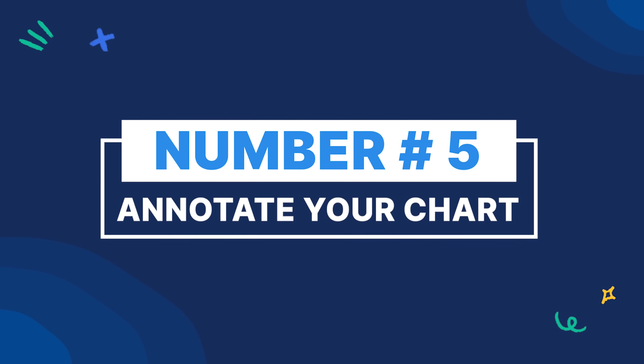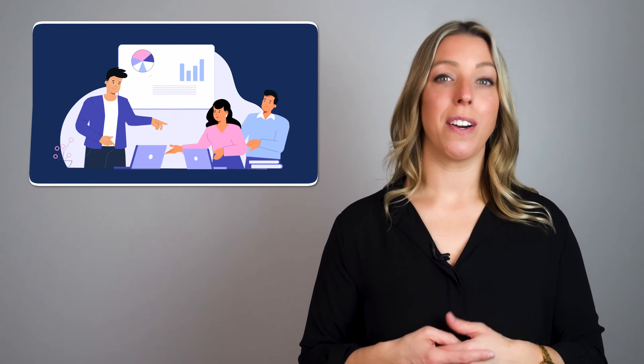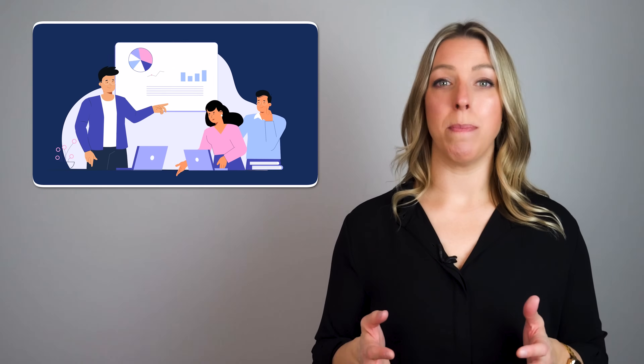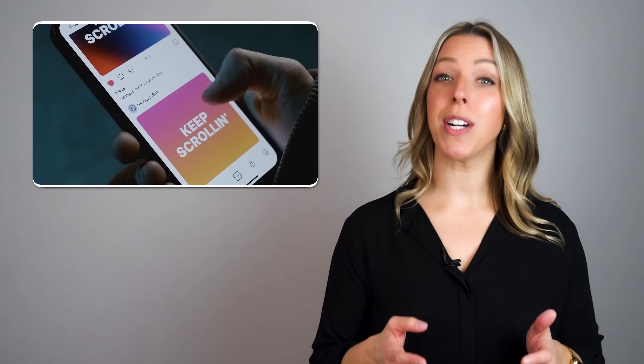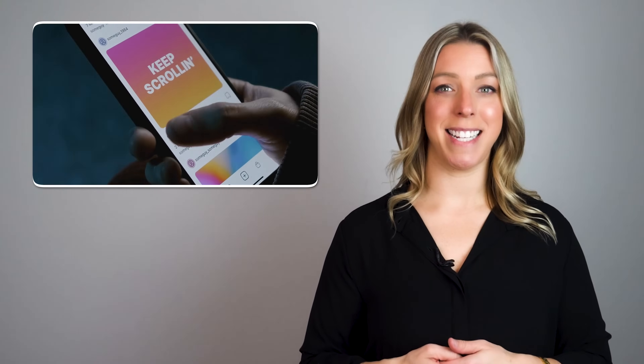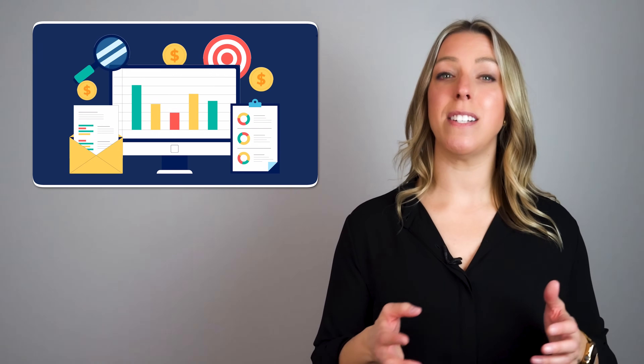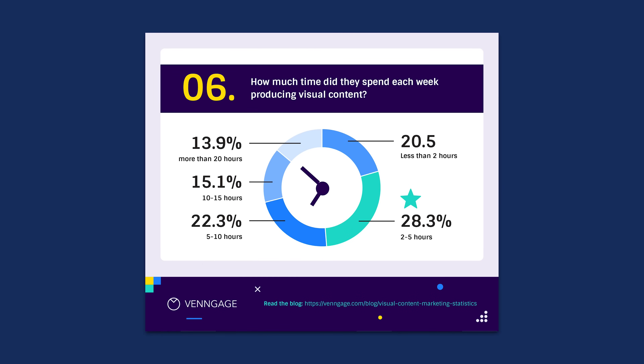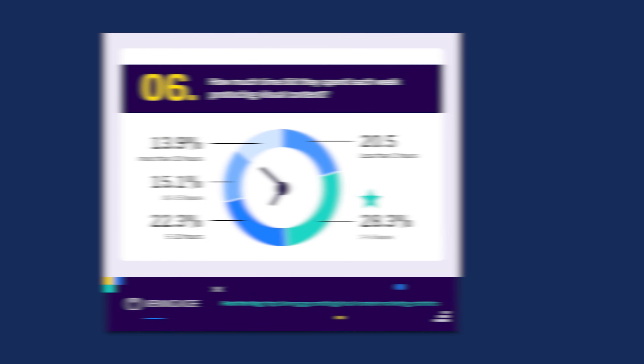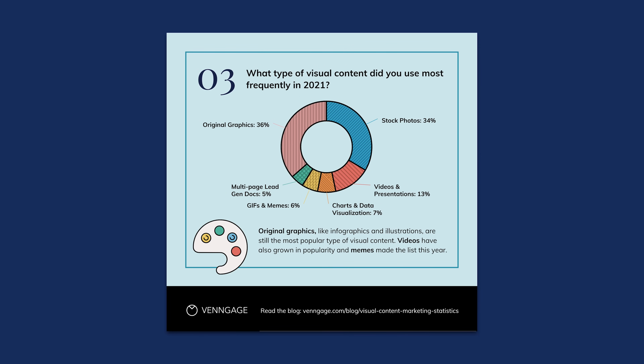Number five: annotate your chart. Charts are a very common element in management-style presentations. But as we know, people have shorter attention spans these days, so it's important to make your charts easy to consume. To help your audience read your graphs, you can add colors, arrows, circles, or even text right at the top of your chart. It's something most people forget to do, but it makes a world of difference.